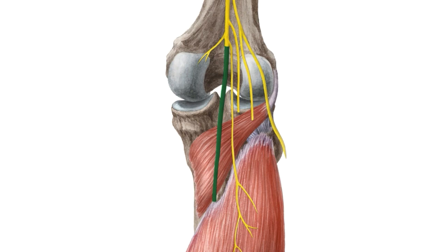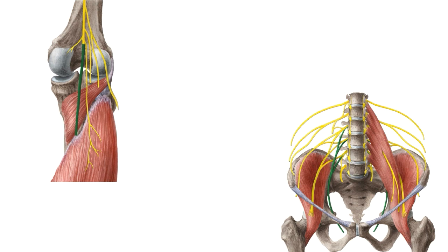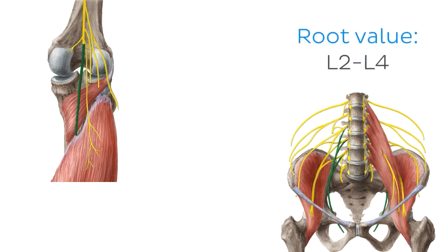Just a quick note here, useful for practical exams: the root values of these nerves. The root values of the branches of the posterior division of the obturator nerve are L2, L3, and L4. And in this case, the root value of the tibial part of the sciatic nerve is L4.